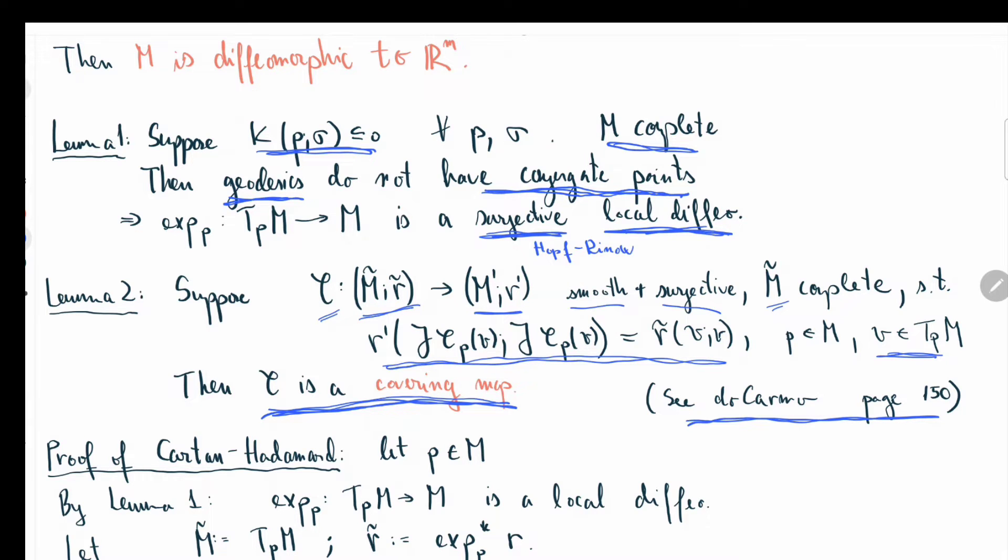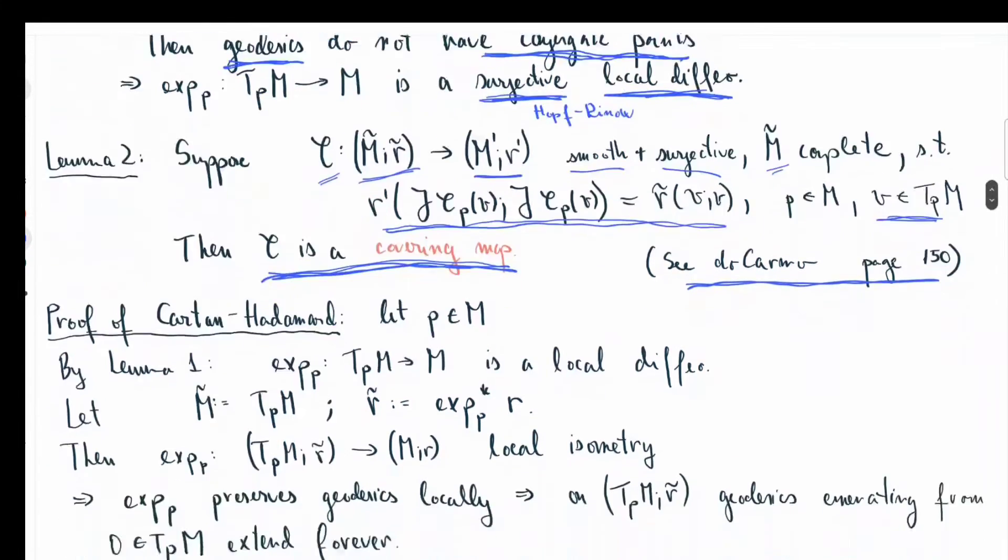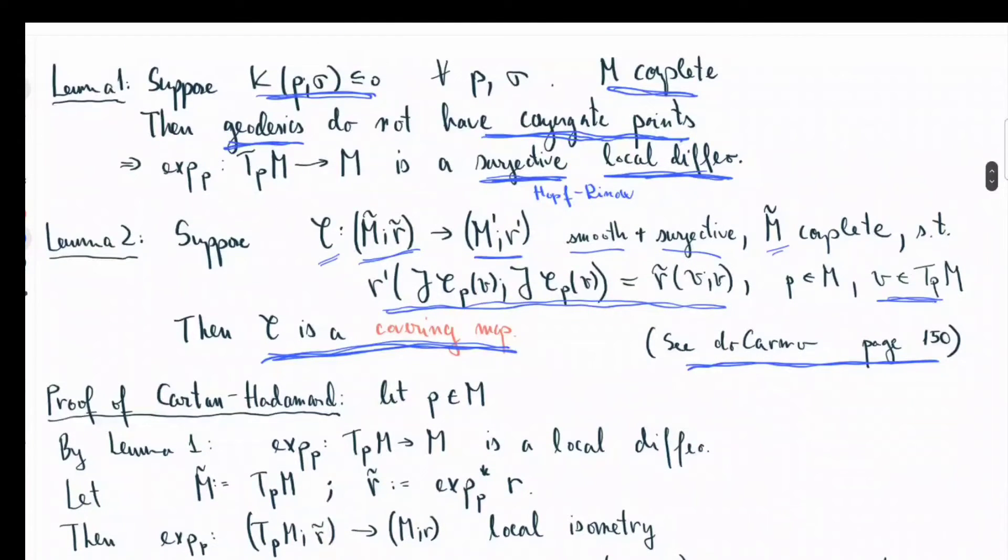Now let's accept lemma 1 and lemma 2, and I'm going to prove Cartan-Hadamard using these two lemmas. Let's pick a point p on my manifold, and by the first lemma, the exponential map with base p is a local surjective diffeomorphism. Let's pick M-tilda to be T_p M, the tangent space at p, and then pull back the metric r from M using the exponential map.